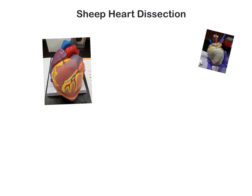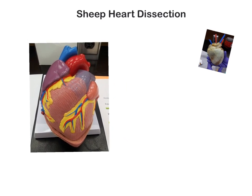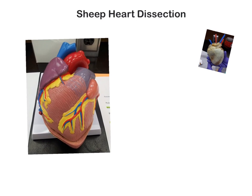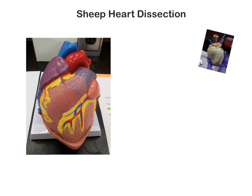The first thing to determine when looking at the sheep heart is which is the anterior surface or the ventral, and which is the posterior or the dorsal surface. If we take a look at the model, we can see that there is a prominent coronary artery going at an angle, and this is the anterior interventricular branch of the left coronary artery.